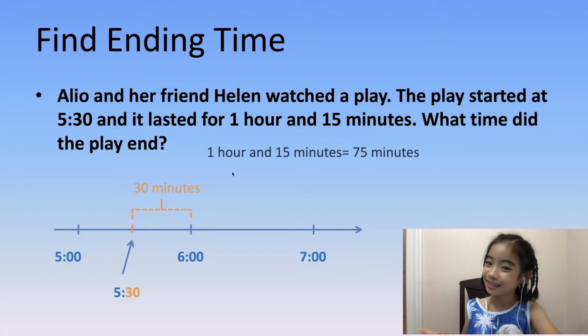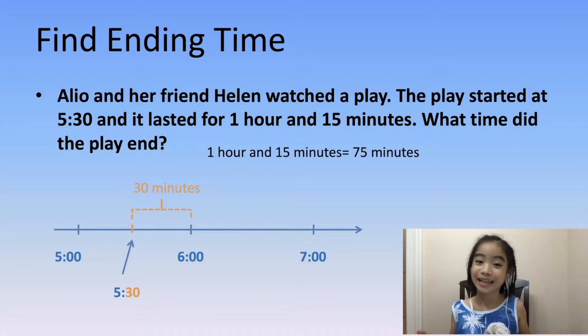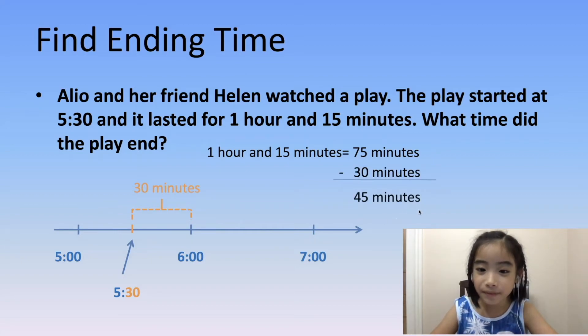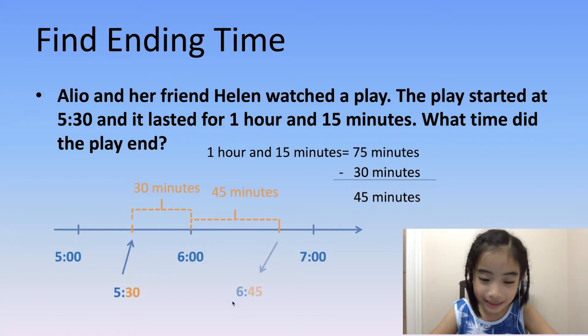And here's a little tip: 1 hour is 60 minutes, so 1 hour and 15 minutes we can convert into 75 minutes. Now, let's subtract. 75 minutes minus the 30 minutes is 45 minutes. So 45 minutes past 6 o'clock is this short yellow line over here. This is 6:45. So the play ended at 6:45.